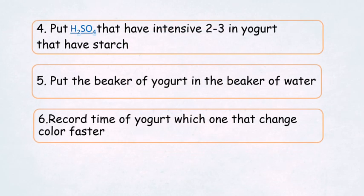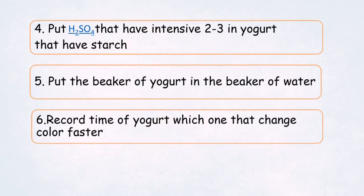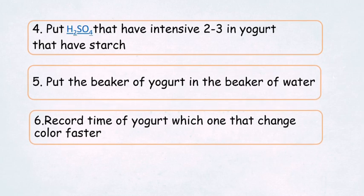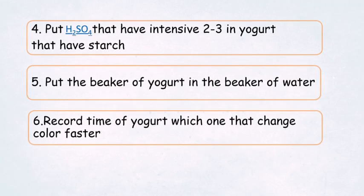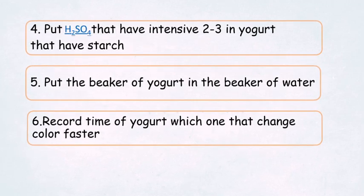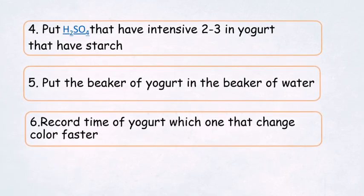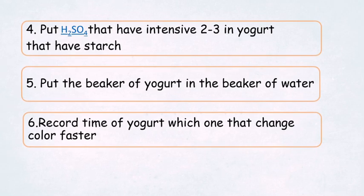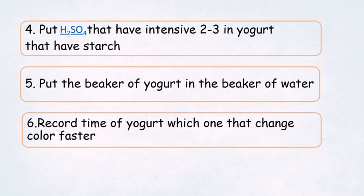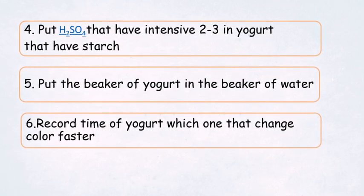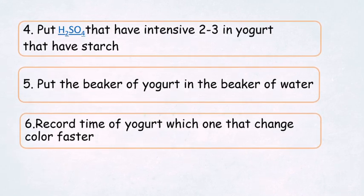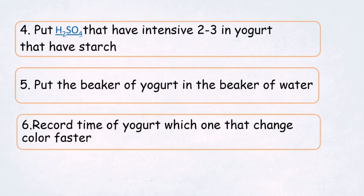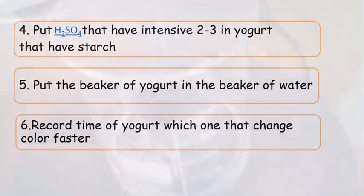Fourth, put sulfuric acid with intensity 2 or 3 in yogurt that has starch. Fifth, put the beaker of yogurt in the beaker of water. Sixth, record the time of which yogurt changes color faster.